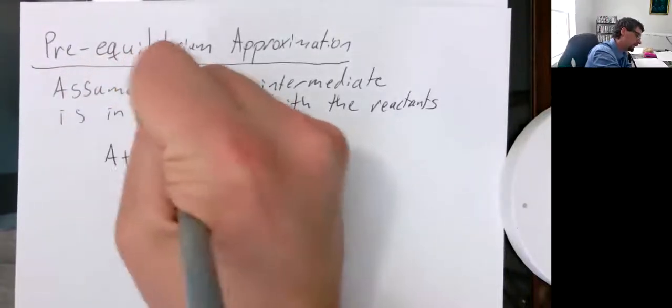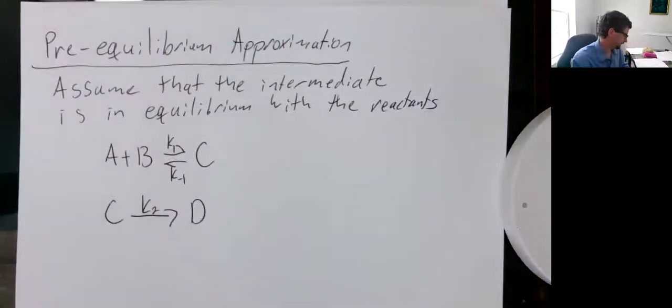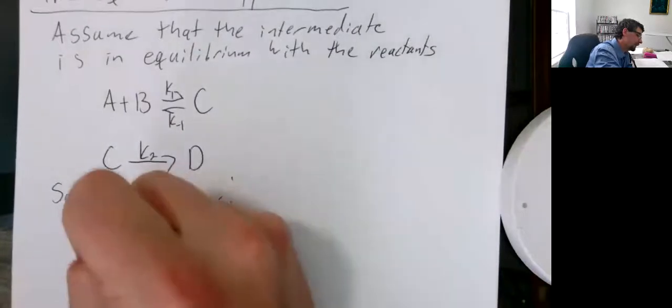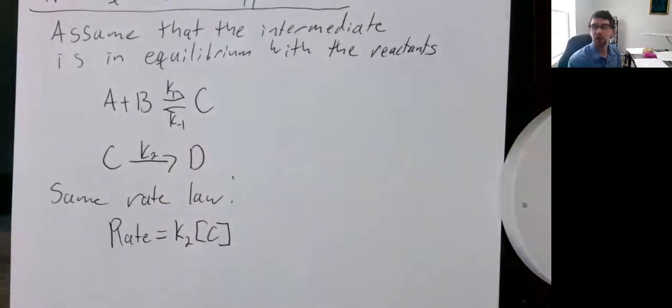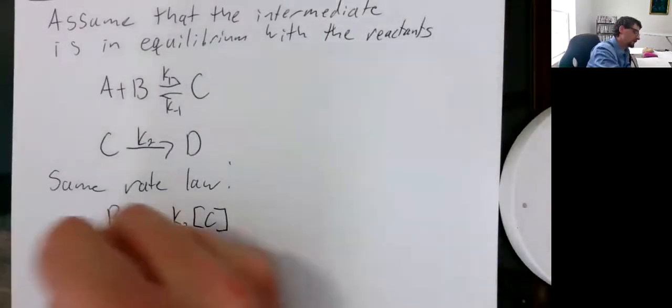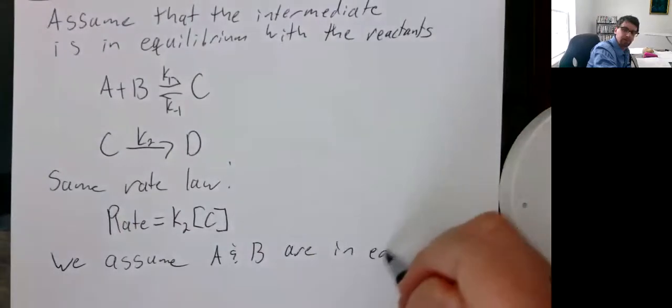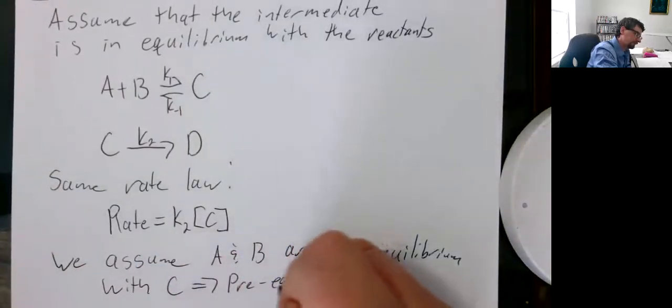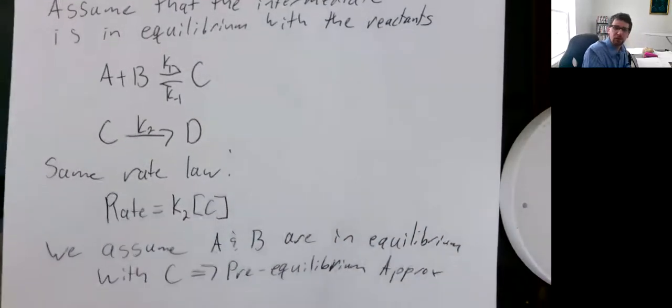Remember, we still have the following elementary steps. We have A plus B in equilibrium with C. And then we have C being consumed to make D. We still have the same initial or the same starting rate law. The rate is equal to K sub 2 times C. And again, we need an expression for C because C is an intermediate. It's hard to keep track of. So how do we do that? We are going to assume that A and B are in equilibrium with C. And this is the pre-equilibrium approximation.